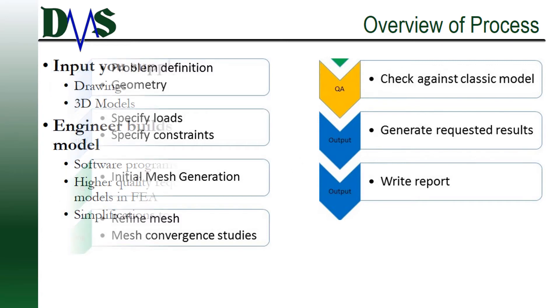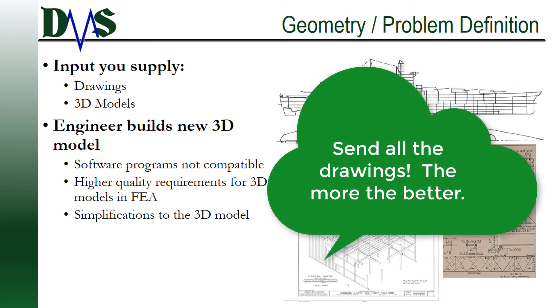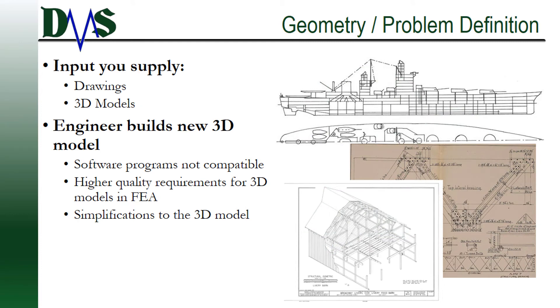The geometry is where it all starts. The engineer will need to build an accurate 3D model for the FEA analysis. You're going to want to supply all the geometry that you can to the engineer. This includes drawings, 3D models, any information you can about the section that you need FEA analysis for. If you want to install new equipment, the engineer also needs to know the details about that equipment and the structural details of the ship at the installation location. The engineer will likely need to take all of that information and build a new 3D model specific to the FEA.